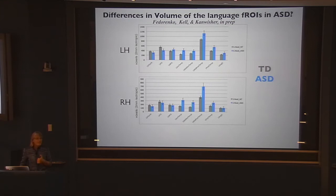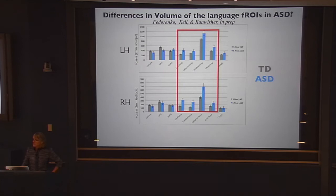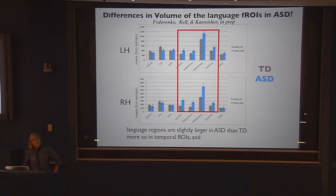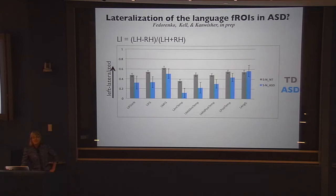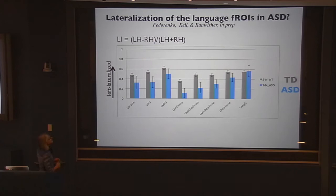The same in the right hemisphere — in fact even more so. In the temporal regions there are substantially larger language activations in people with autism than typical subjects. So these regions are larger in ASD. That increase in size is greater in the temporal lobe than frontal regions, and more so in the right hemisphere, leading to a sizable difference in lateralization — people with autism show less left-lateralized language activations than typical subjects. People with autism have bigger language regions, and there's more on the right.